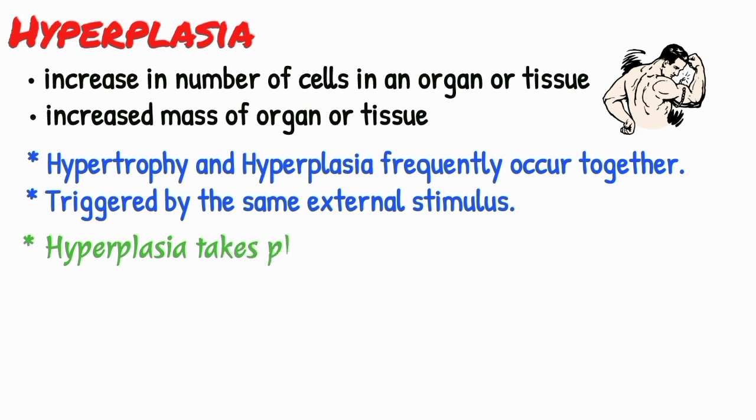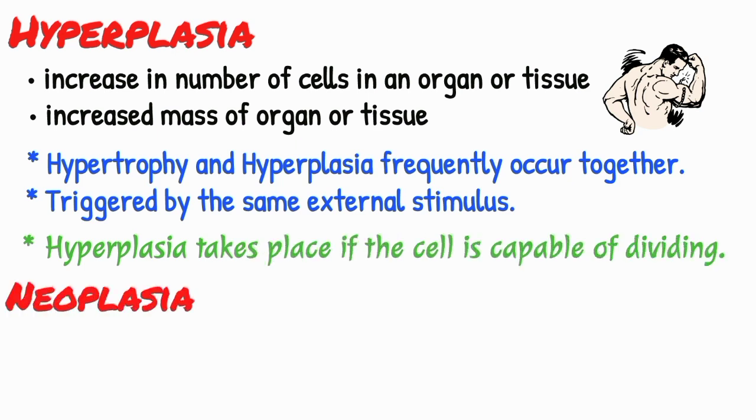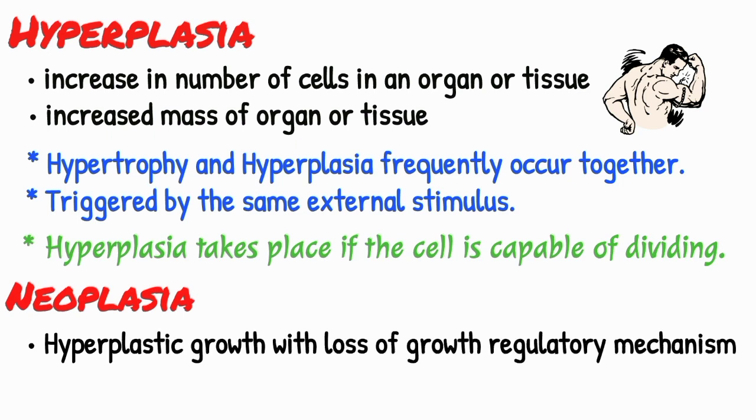and may be triggered by the same external stimulus. Hyperplasia takes place if the cell is capable of dividing. Neoplasia differs from hyperplasia in having hyperplastic growth with loss of growth regulatory mechanisms due to changes in genetic composition.